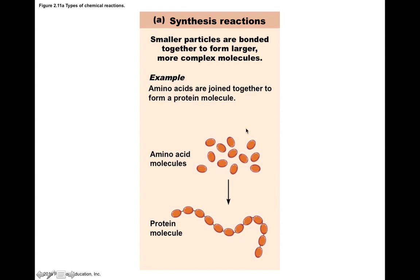When you go from lots of smaller molecules to a larger one, we call this an anabolic reaction. Anabolic reactions are typically the building up of larger molecules. So your body can have anabolic pathways where you take individual amino acids to make a large protein molecule.